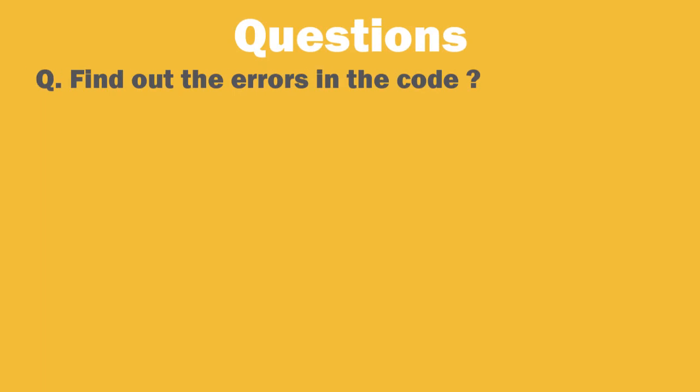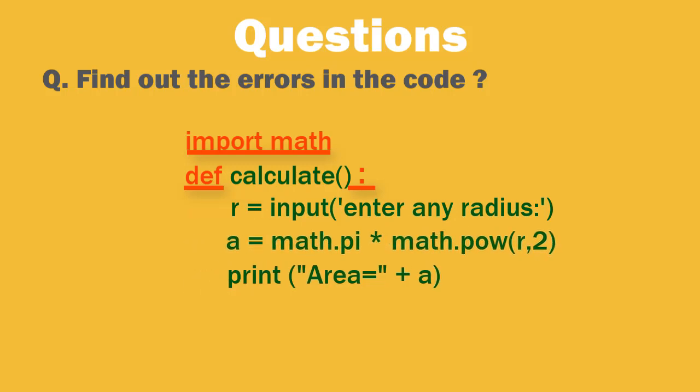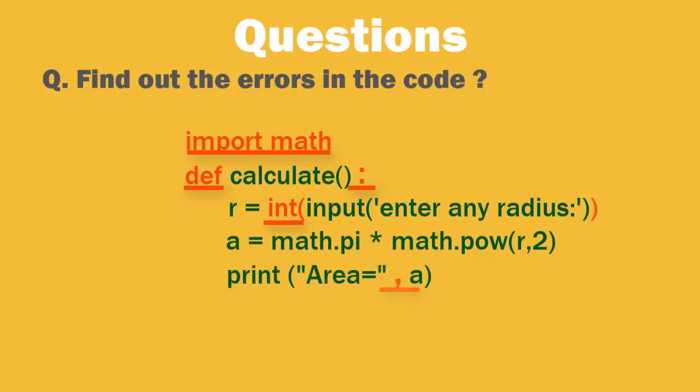Now let's look at few questions that can be asked on functions. First is where you have to remove the errors in the code. Like here, the math module is being used but it is not imported, so we'll import the math module first. Then def is written with D capital, we need to correct that. Then colon is missing after function definition, so we need to add that. The function indentation is missing, so we will indent it. Next the user input is not converted to integer, so we will use int function to convert it. Last in print plus is used instead of comma, so we will correct it. This gives us the corrected code.